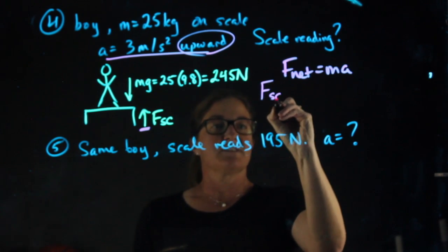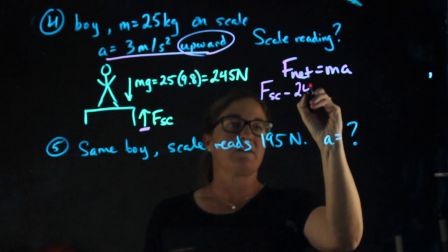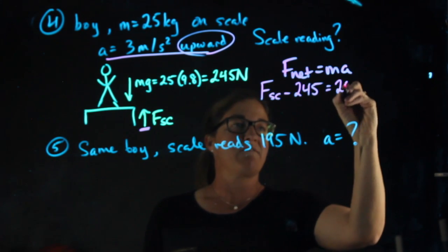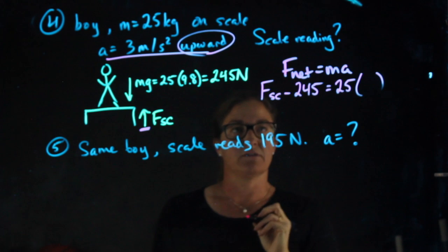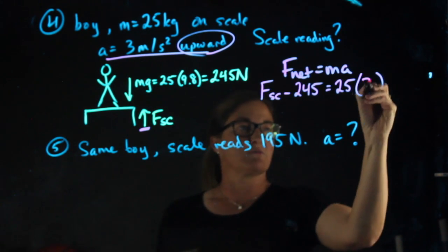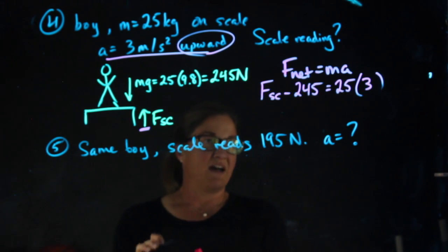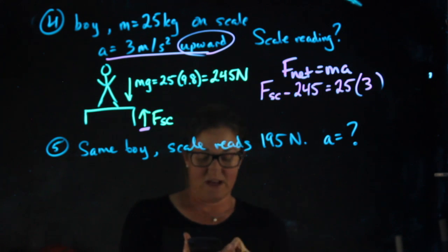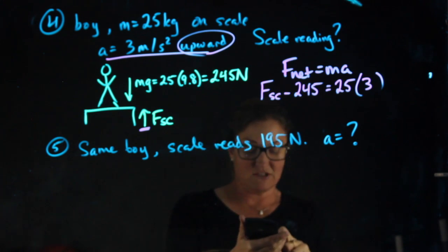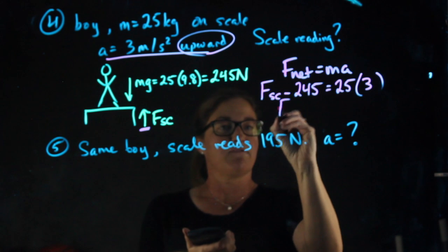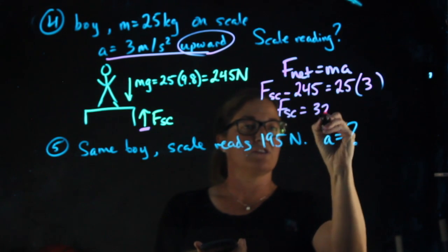So the force of the scale minus 245 will equal 25 times the acceleration, and the acceleration was 3. So now we have 25 times 3, which is 75, plus 245 gives me a force of the scale equal to 320 newtons.